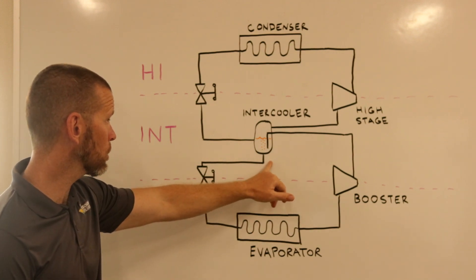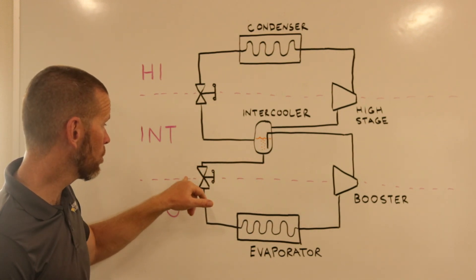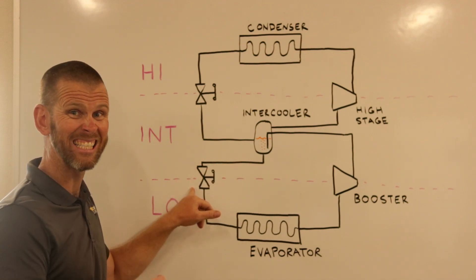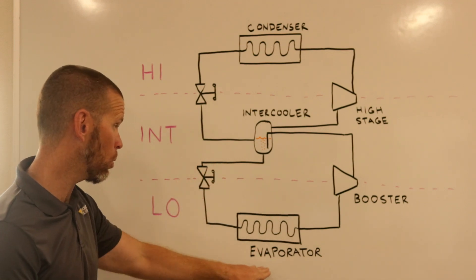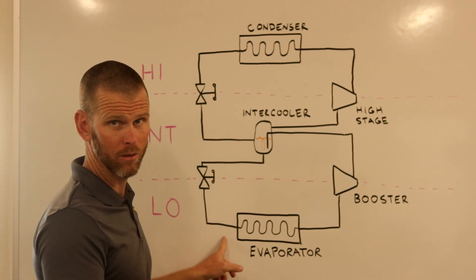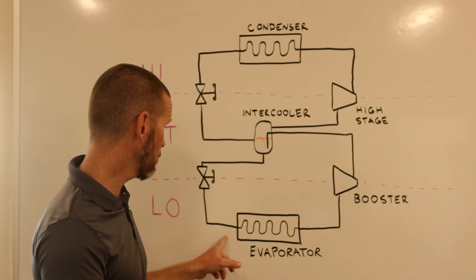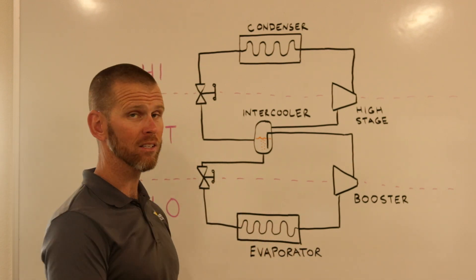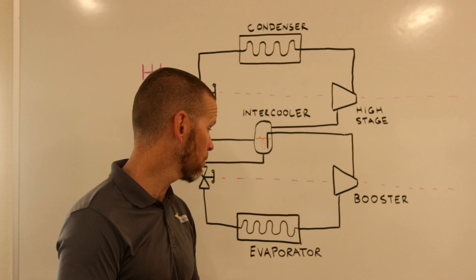Low-pressure liquid exits the intercooler, goes through an expansion valve which lowers the pressure even further into our desired low temperature that we want in our evaporator, so that we can supply that low-temperature refrigerant into the evaporator, where it absorbs heat from whatever's being cooled, causing the refrigerant to evaporate or boil.